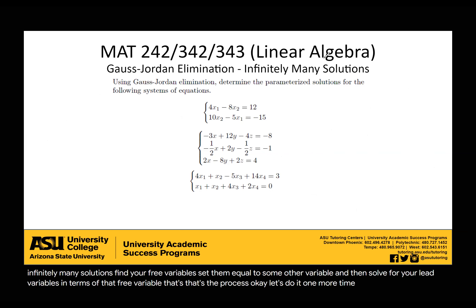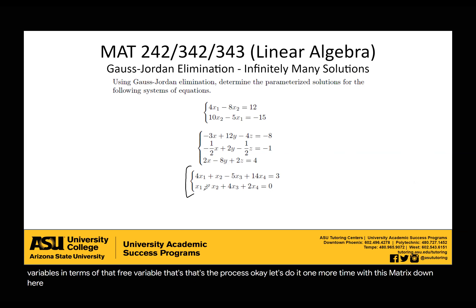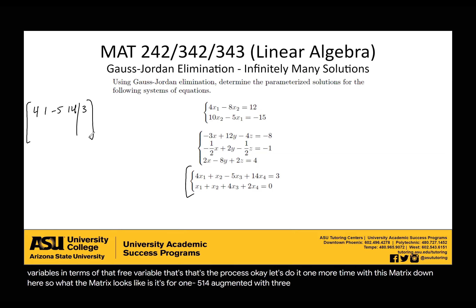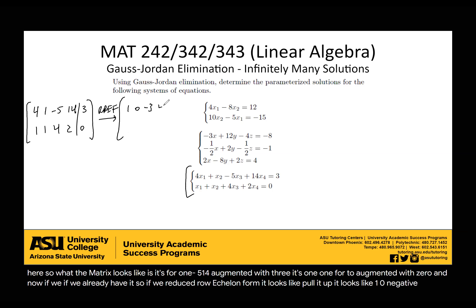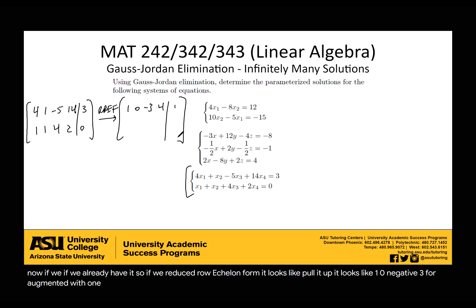Let's do it one more time with this next matrix. The matrix is: row 1 is 4, 1, negative 5, 14 augmented with 3; row 2 is 1, 1, 4, 2 augmented with 0. After reducing to RREF, it looks like: row 1 is 1, 0, negative 3, 4 augmented with 1; row 2 is 0, 1, 7, negative 2 augmented with negative 1.